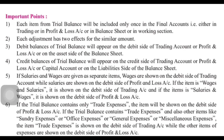Sixth point, also very important: if the trial balance contains trade expenses, they go to profit and loss account debit side. But when you see trade expenses, go through the entire trial balance and check for any other expenses such as general expense, office expense, or miscellaneous expense. If those exist, then trade expense goes to trading account and the other expenses like general or office expense go to profit and loss account debit side. But if only trade expenses are present and no other such expenses exist, then trade expenses go to profit and loss account. These points will help you when solving sums. In the next video, we will solve a sum on final accounts — keep all these adjustments in mind, as they are extremely important to get full marks.